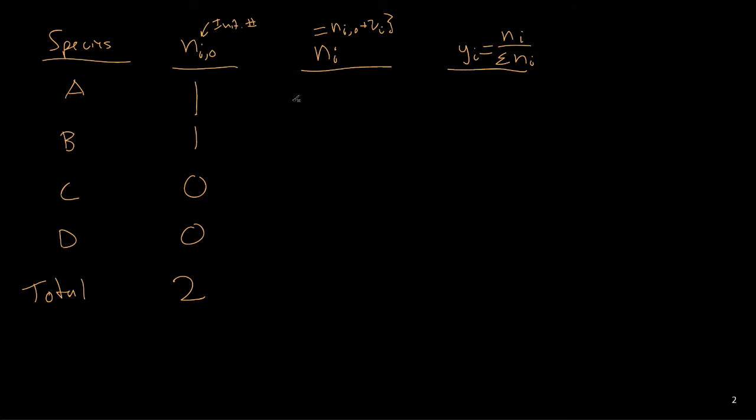Now if we write the number of moles as a function of the extent of reaction, we'll see that we have one initial mole minus the stoichiometric coefficient, which is one, times the extent of reaction for this particular one, and the same thing for B. And with C, we have zero initial moles, but we have a positive one stoichiometric coefficient, and same for D.